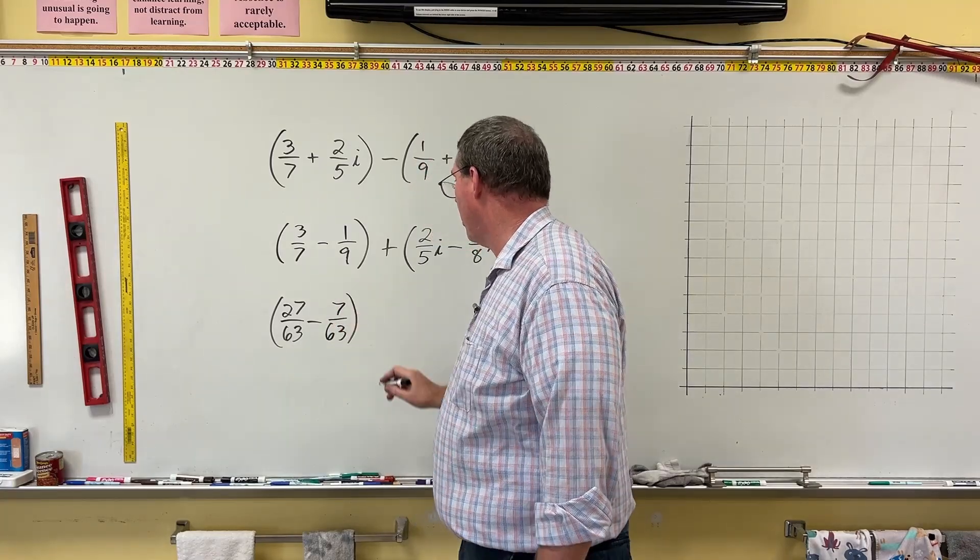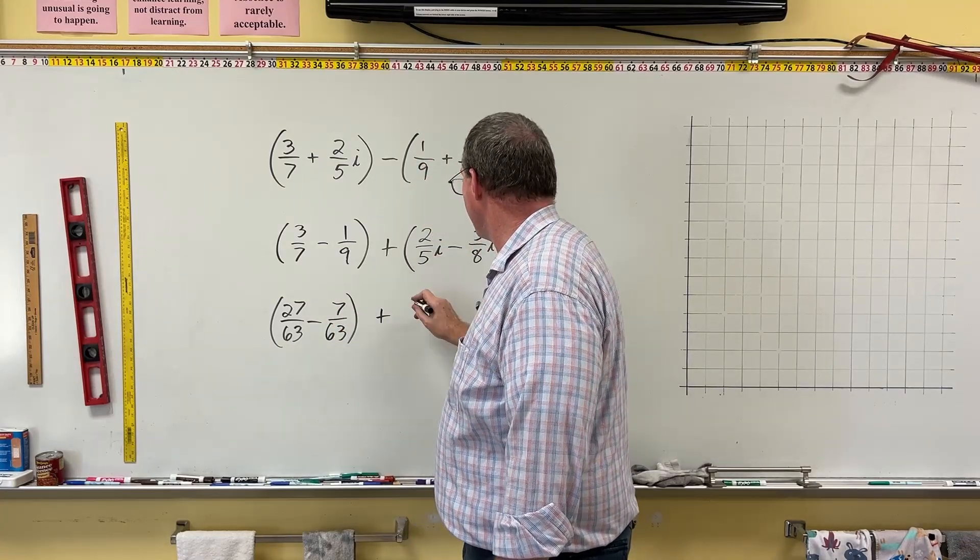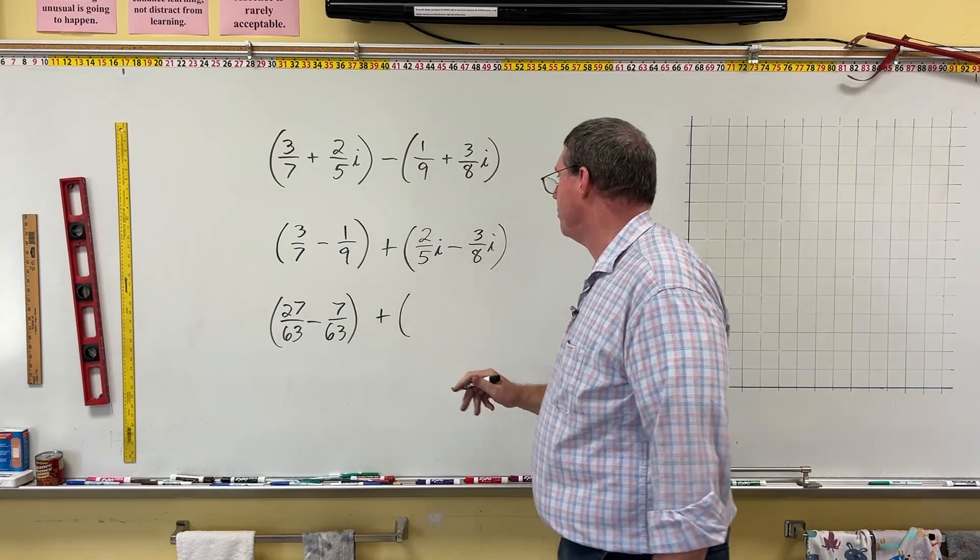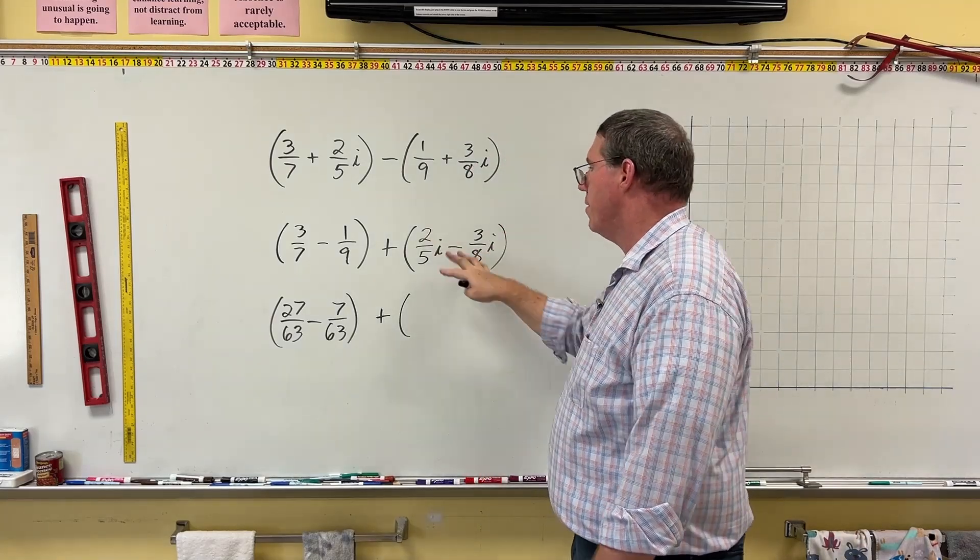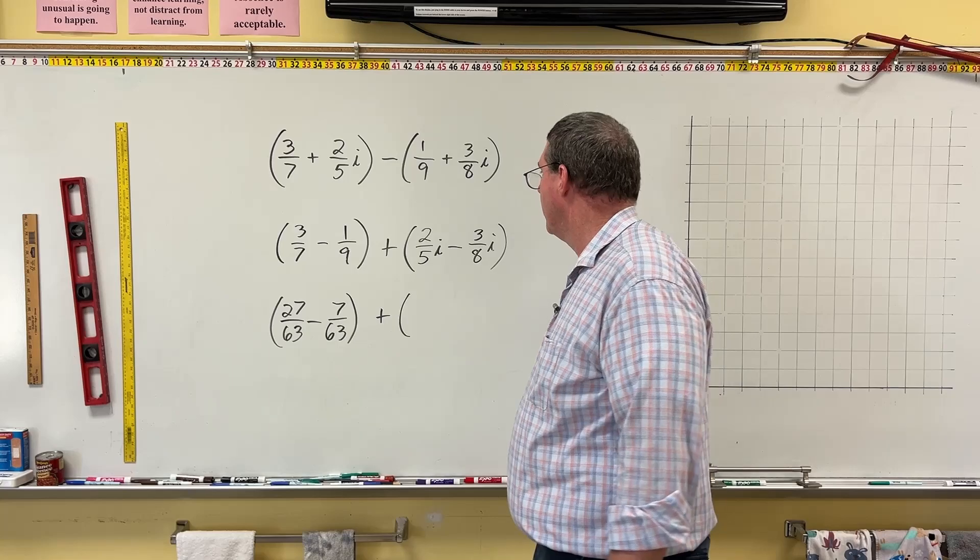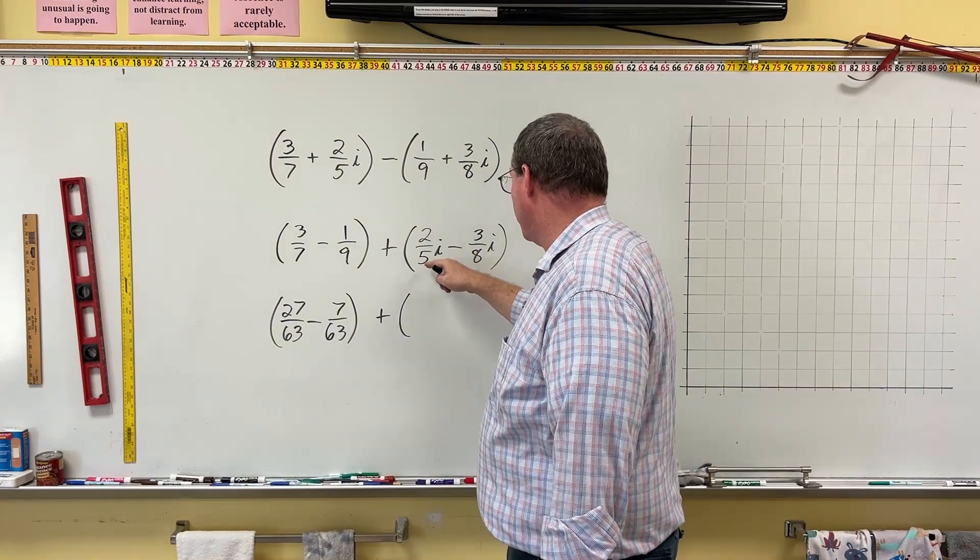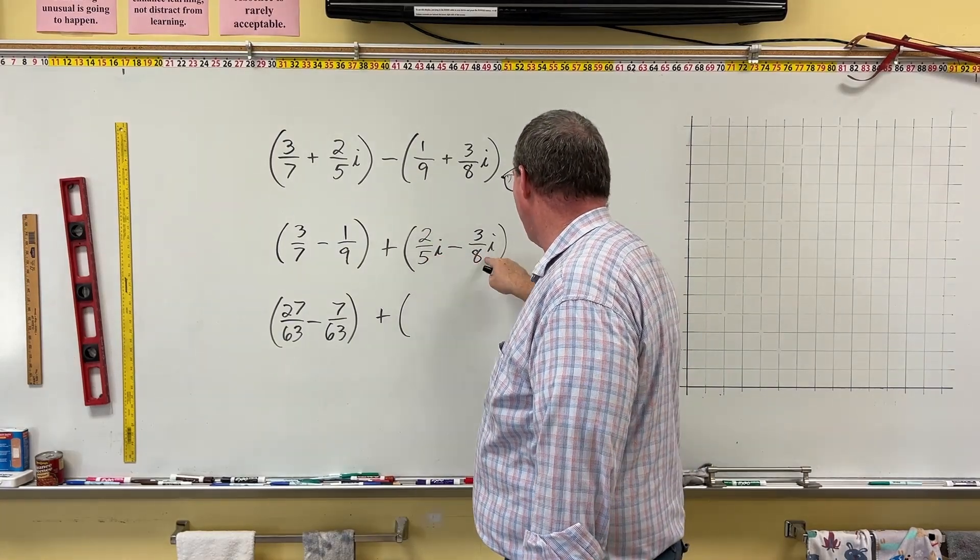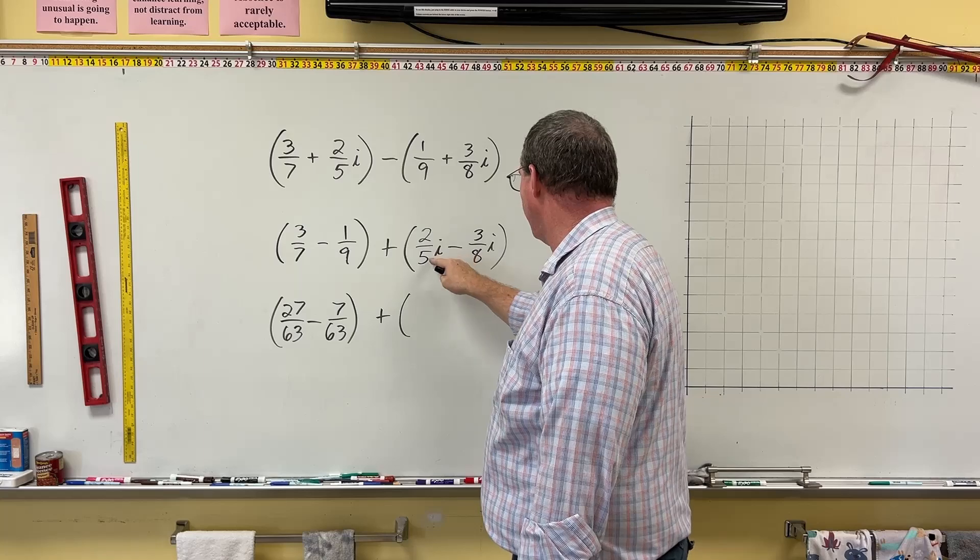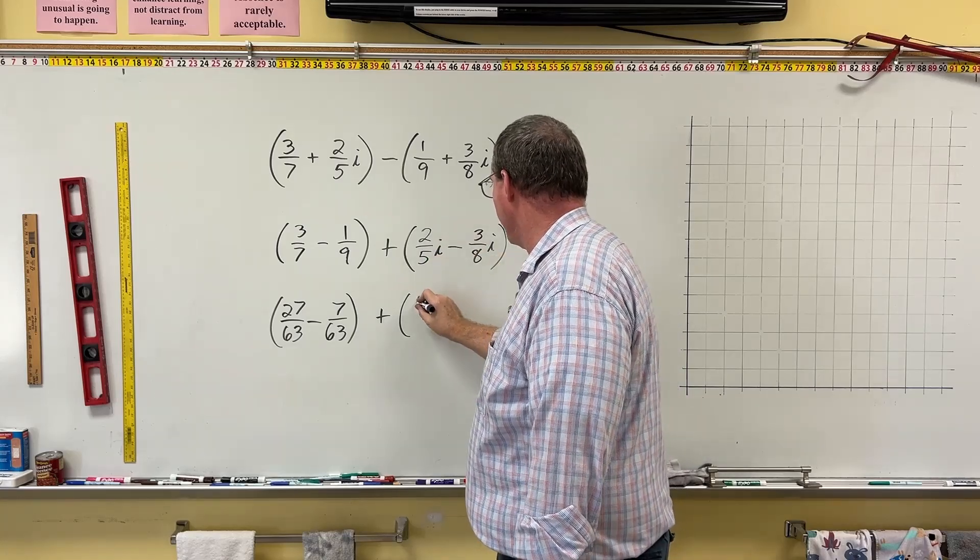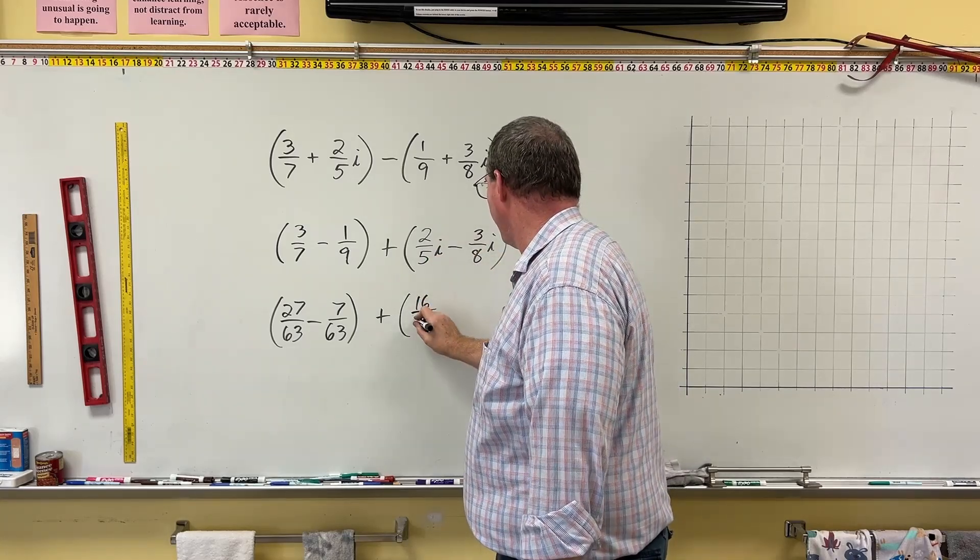Okay, that's the real part, plus. Now we're going to do the same thing over here. The i is irrelevant. We just need to be able to subtract 2 fifths minus 3 eighths, and then the i just goes along for the ride. So, we need to change the 2 fifths by multiplying the 2 and the 5 by the 8. 8 times 2 and 8 times 5. 8 times 2 is 16, 8 times 5 is 40, and then we put an i on minus.